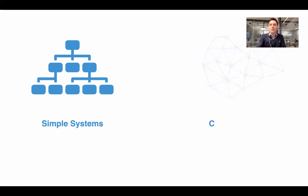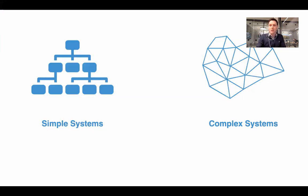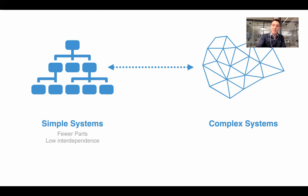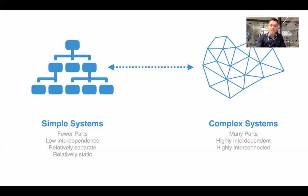To start that discussion, we can quickly make a distinction between simpler systems and the more complex systems we're talking about here. Simpler systems are fundamentally different — they have fewer parts, low levels of interdependence, relatively separate, with relatively low levels of interconnectivity, and they're relatively static. That's in contrast to complex systems, which typically have many parts — sometimes an almost infinite number — are highly interdependent, highly interconnected, and dynamic, adapting and evolving over time.